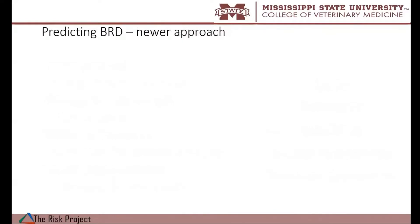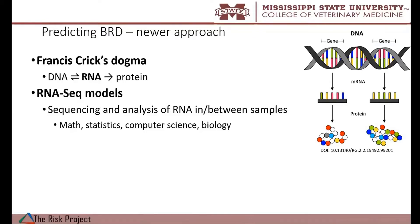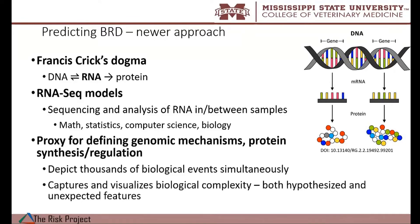This is an opportunity to go into a newer approach. It starts with Francis Crick's central dogma: DNA transcribes into RNA, and RNA translates into a functional product like a protein. We're really interested in the RNA, using RNA-seq — RNA sequencing models — to evaluate RNA by sequencing and analyzing all the RNA in or between samples, specifically using blood. This is a culmination of mathematical algorithms, statistical approaches, computer science, and biology. Ultimately, we take information from differentially expressed genes — these RNAs — as a proxy for defining genomic mechanisms and protein synthesis at a given point in time. This lets us cast a wide net and depict thousands of different biological events and candidate biomarkers simultaneously.